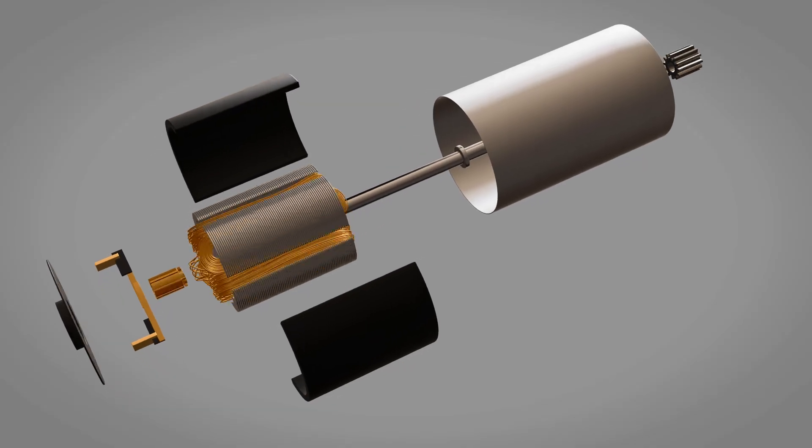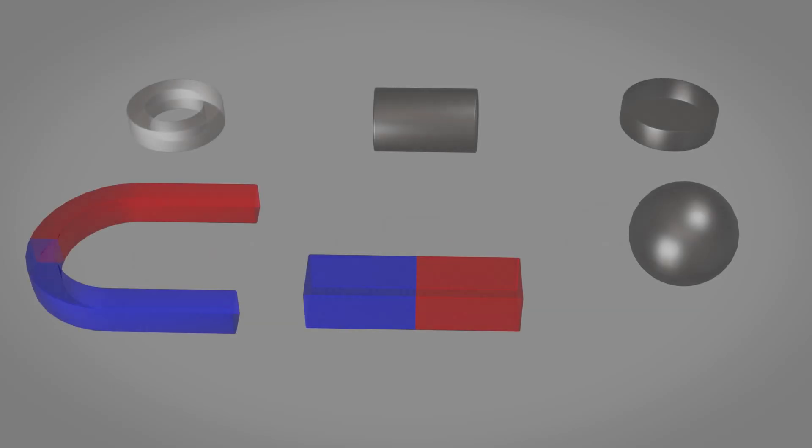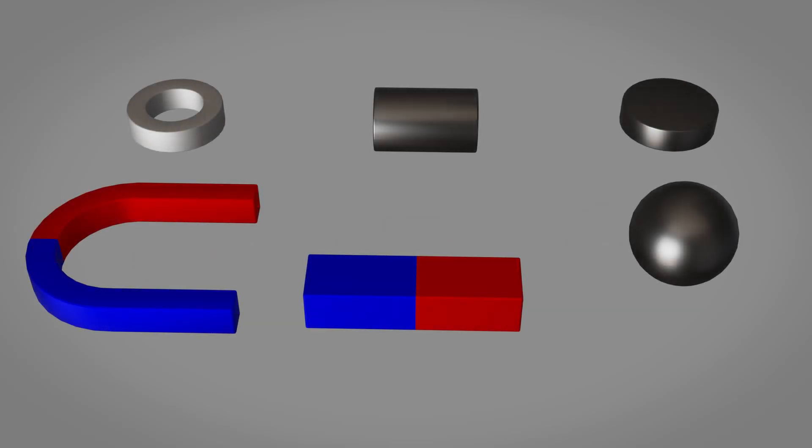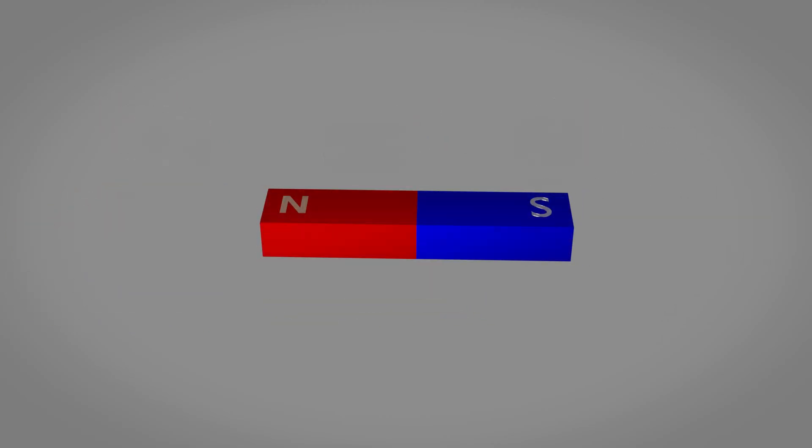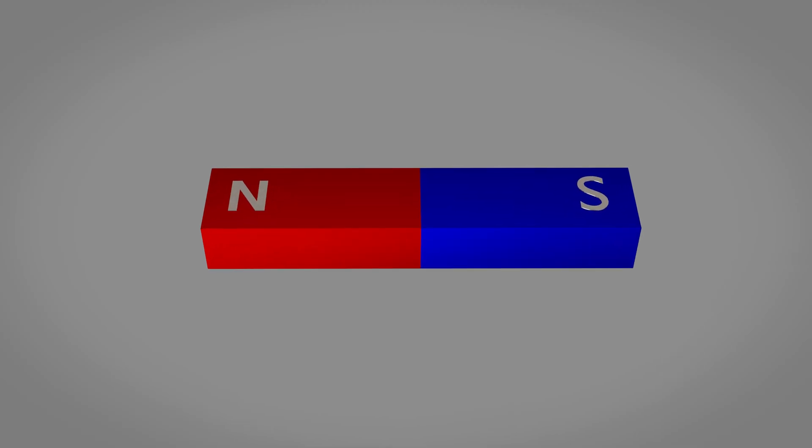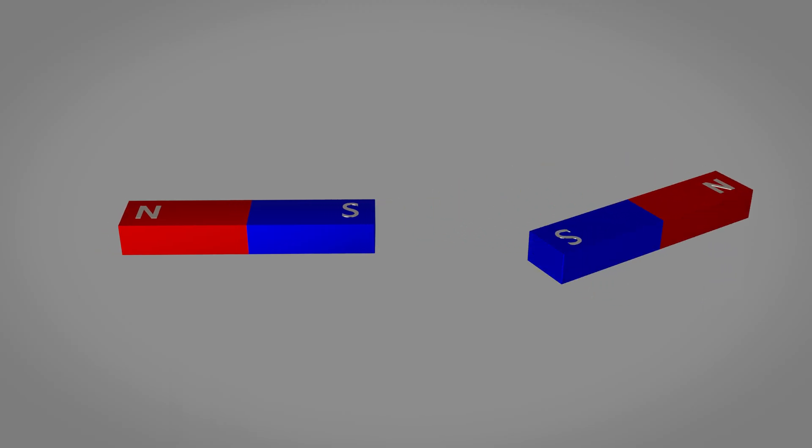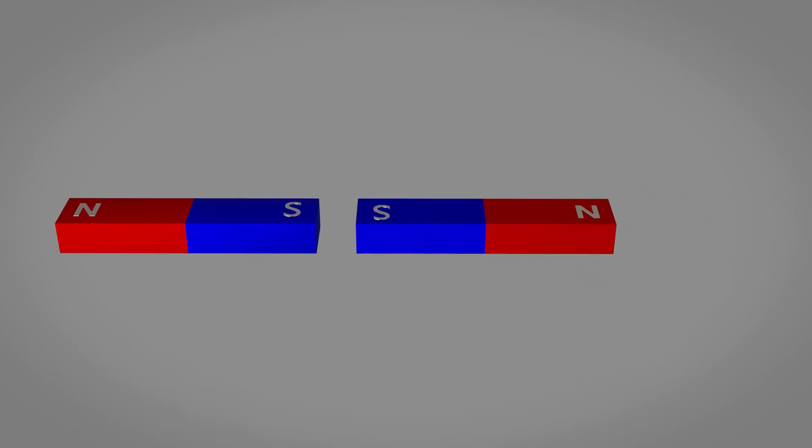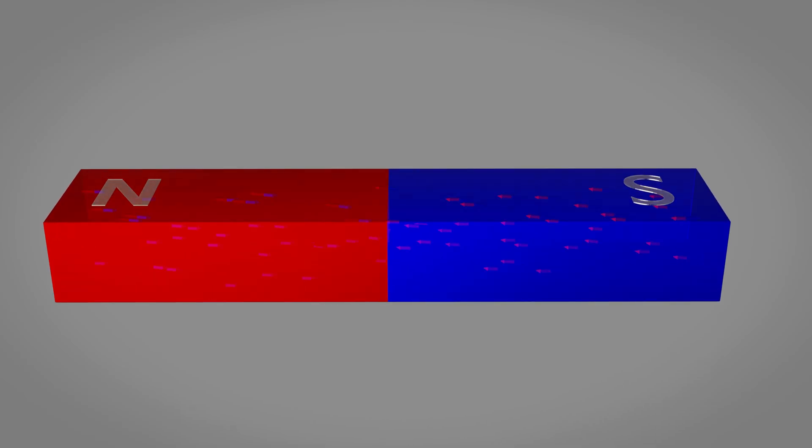Before diving into motors, let's explore the fundamental force that makes them possible: magnetism. Magnetism surrounds us in countless everyday applications, though we rarely pause to consider its presence. Every magnet, regardless of size or shape, possesses two distinct poles: north and south. These poles exhibit a simple yet powerful behavior. Unlike poles attract each other, while like poles repel. This isn't just a surface phenomenon. It's rooted in the atomic structure of magnetic materials themselves.